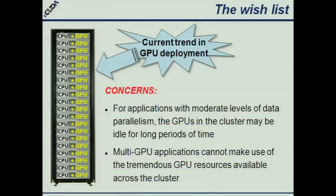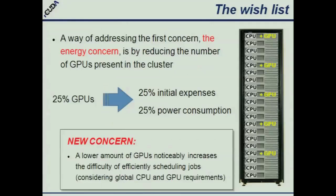This is our wish list. Currently we have a cluster with many CPU cores in every node and one or more GPUs per node. The first problem is that with moderate levels of data parallelism, GPUs in the cluster may be idle for long periods of time — this costs money. The second concern is that an application running in one node can only use the GPUs attached to that node; it cannot use idle GPUs on other nodes, even if those are available.